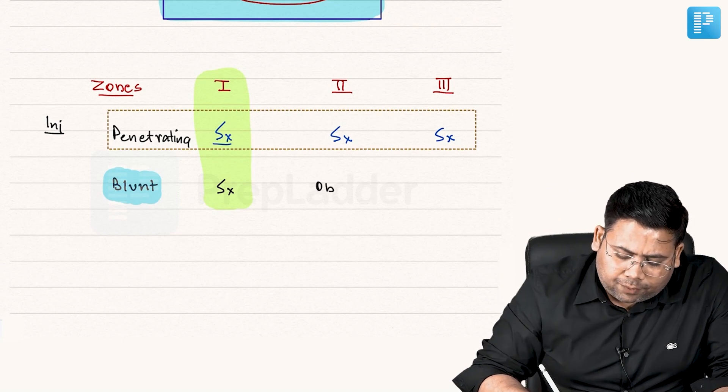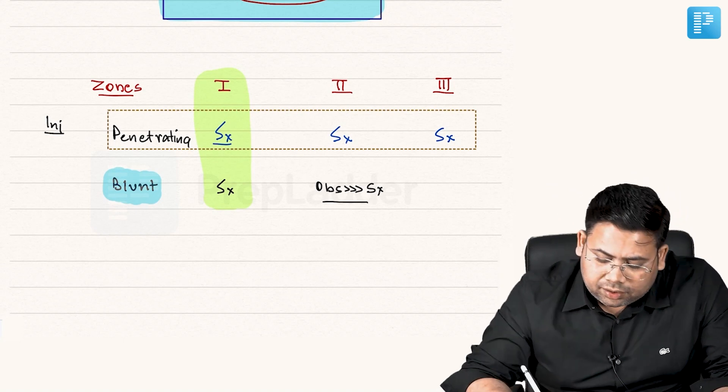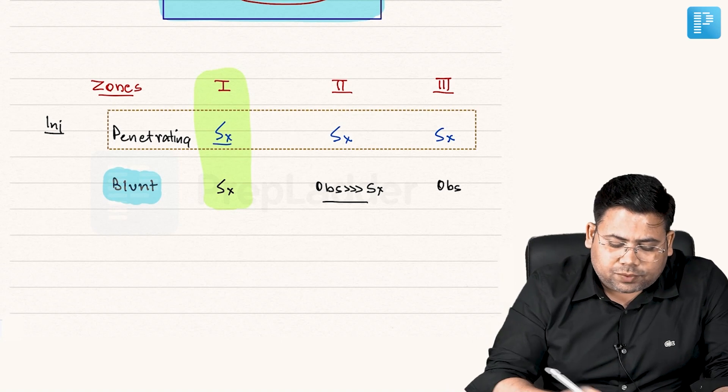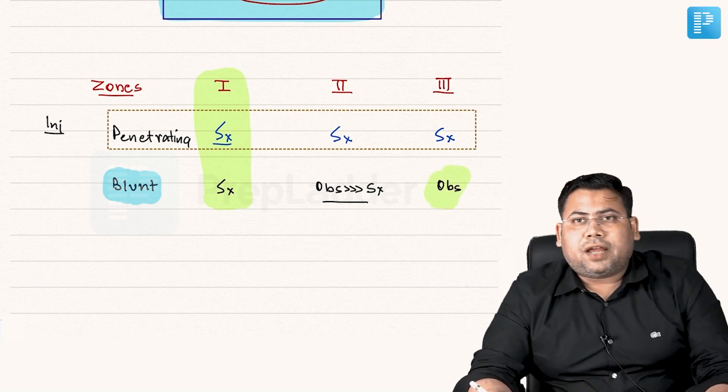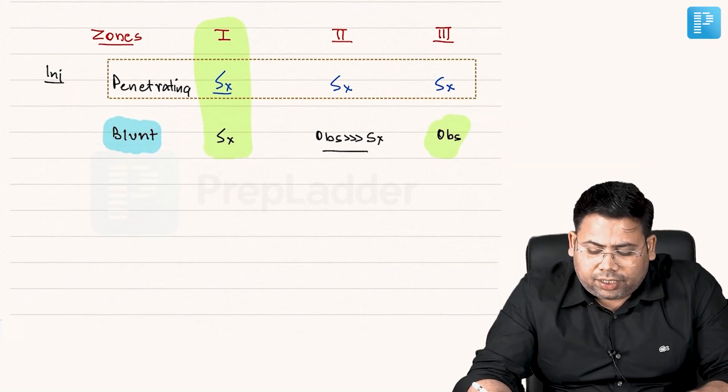When we talk about zone two, it is observation more than surgery. And for zone three, it is observation always. Why it is observation always? Because we have something which is known as retroperitoneal tamponade effect.